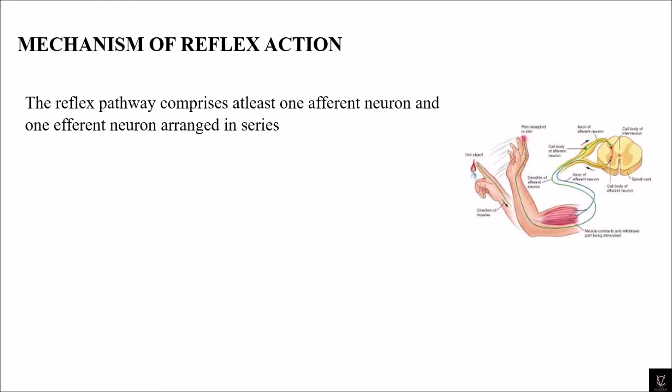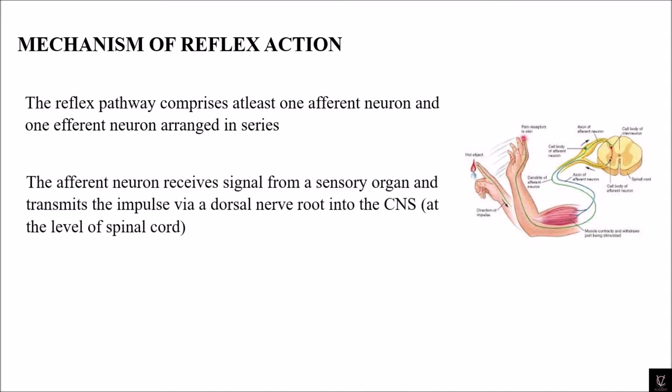Coming to the mechanism of reflex action: the reflex pathway comprises at least one afferent neuron and one efferent neuron arranged in series. The afferent neuron receives a signal from a sensory organ and transmits the impulse via the dorsal nerve root into the CNS at the level of the spinal cord.